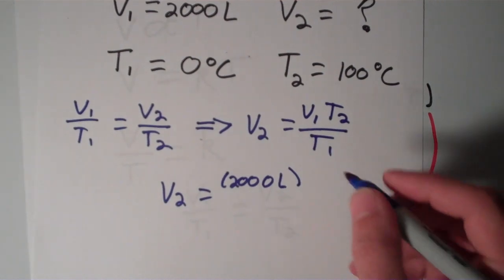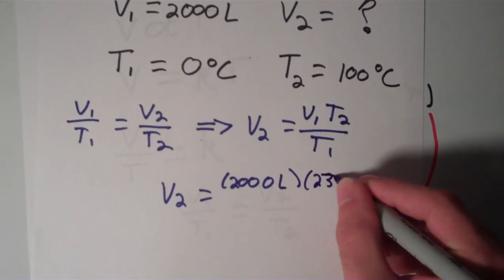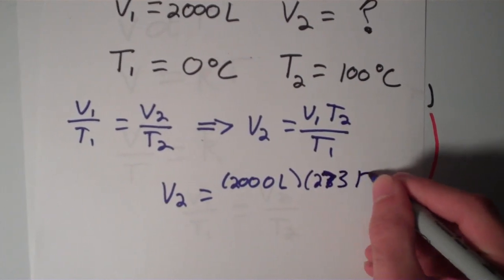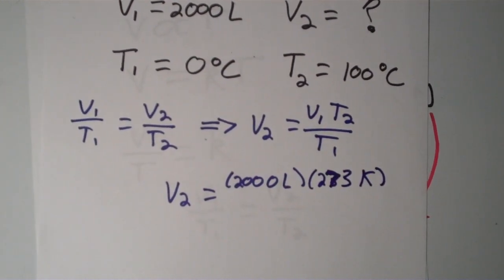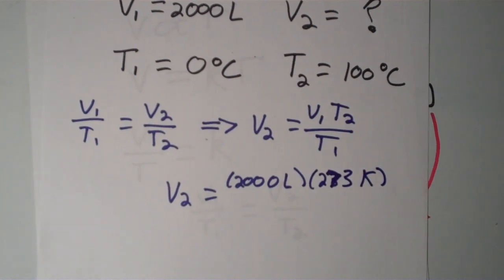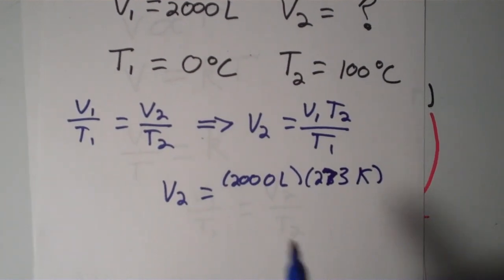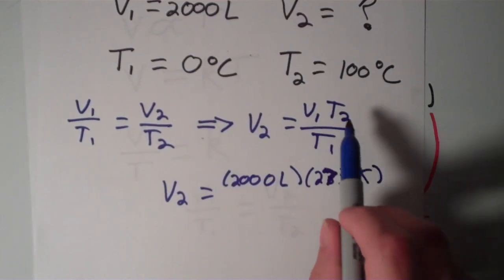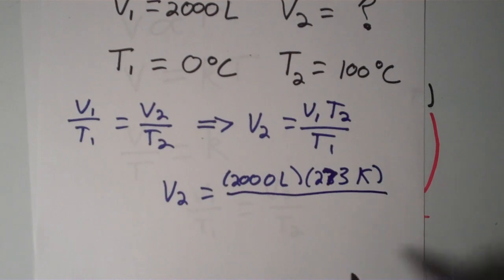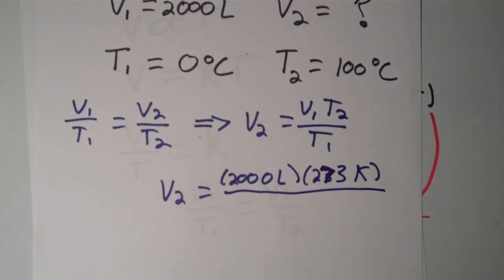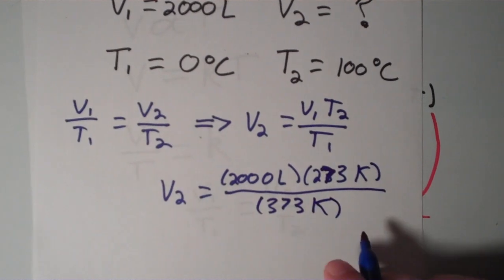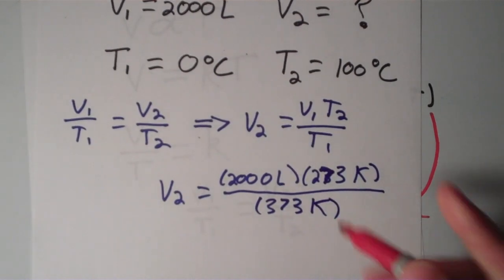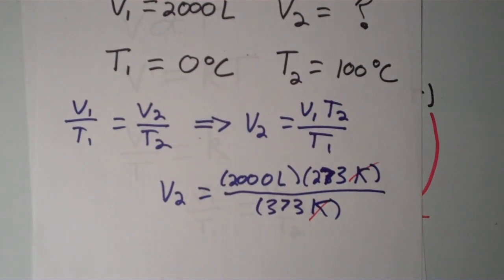So 0 degrees Celsius is actually 273 Kelvins. It's actually 273.15, but for the purposes of this video, we'll just call it 273. So that's V1, that takes care of V1 and T2. So now we have to divide this whole thing by T1, which is 100 degrees Celsius. And if we convert that also to Kelvin, we would get 373 Kelvins. And it looks like our Kelvins cancel, and that leaves us with nothing but liters.